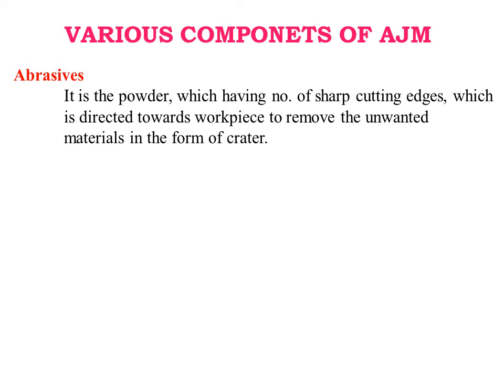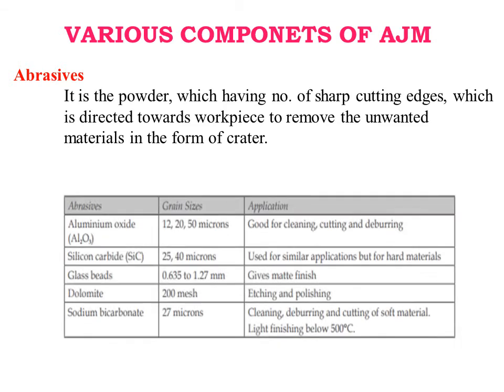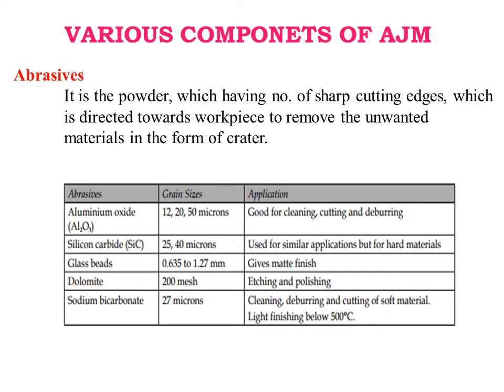Abrasive: It is the powder having a number of sharp cutting edges which is directed towards the workpiece to remove unwanted material. Aluminum oxide of grain size 12–20 microns is used for cleaning, cutting, and deburring. Silicon carbide of 25 or 40 microns is used for similar applications on hard materials. Glass beads of 0.635 to 1.27 mm are used for polishing. Dolomite 200 mesh is used for etching and polishing. Sodium bicarbonate of 27 microns is used for cleaning, deburring, and cutting of soft materials.